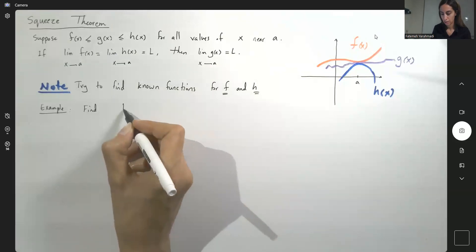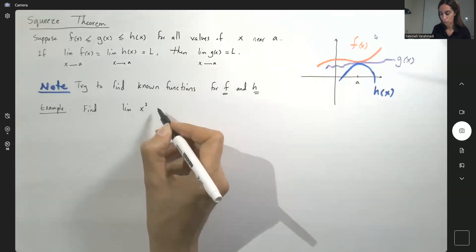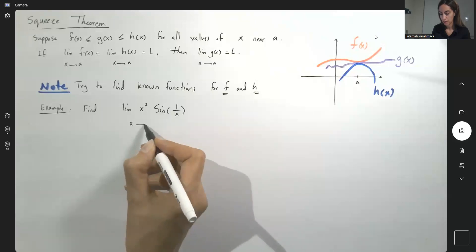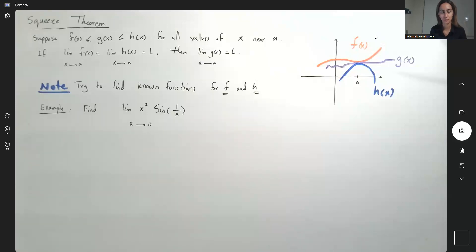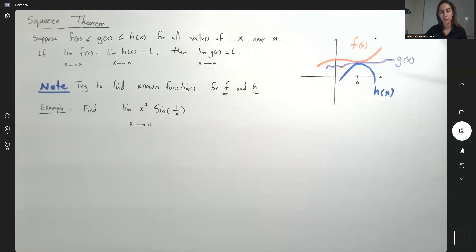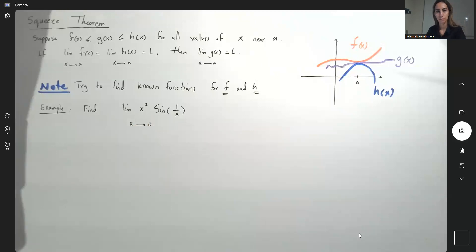Find the limit of x squared times sine of 1 over x as x approaches 0. So you have the function sine of 1 over x. Let's use Desmos and take a look at the behavior of this function. I'm opening up Desmos to show you what the graph looks like.